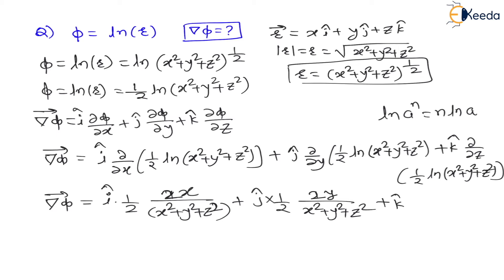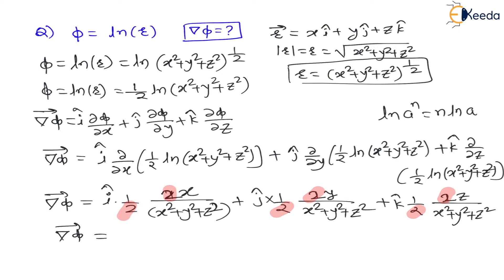For the k-component, 1/2 is again constant. The derivative of ln(x²+y²+z²) with respect to z gives 1/(x²+y²+z²). Here z is the variable, so x² and y² derivatives are 0, and z² becomes 2z. Therefore the k-component is (1/2)·[1/(x²+y²+z²)]·2z. Now the 2's cancel with the 1/2, and we get ∇φ = (x·i + y·j + z·k)/(x²+y²+z²).